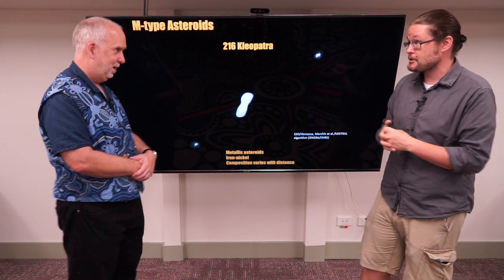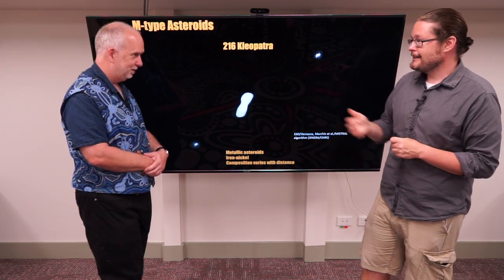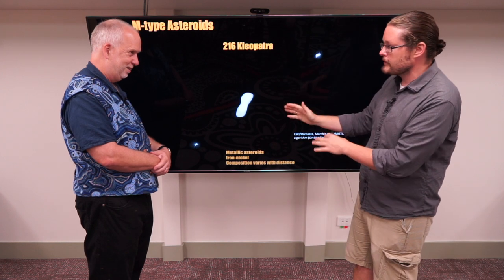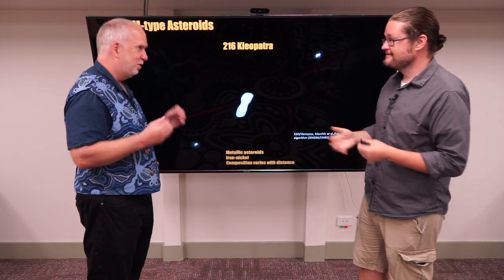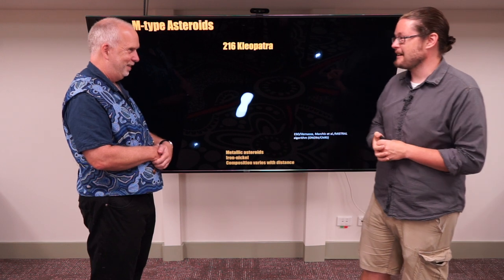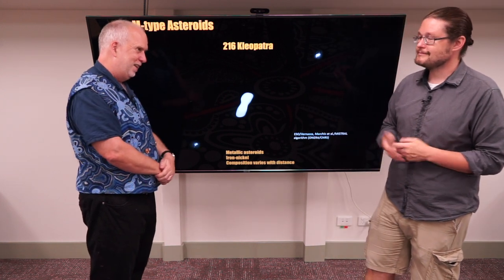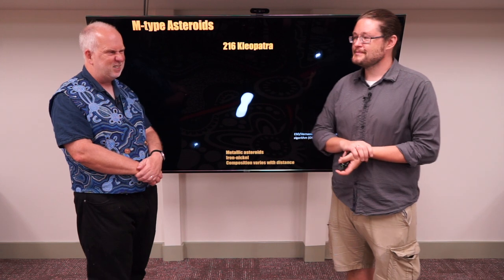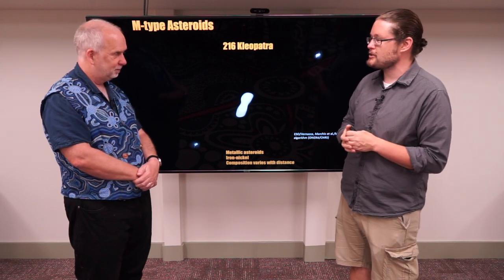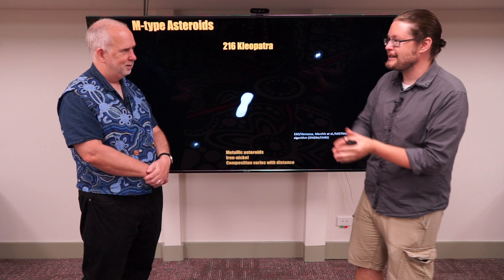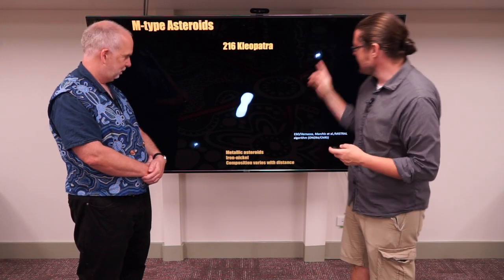Recent missions like OSIRIS-REx and Hayabusa-2 have visited C-type asteroids and brought samples back, which is amazing. Hayabusa-1 visited an S-type asteroid, Itokawa. We haven't visited these M-types yet, but they're the ones we talk about for mining because M stands for metal — iron and nickel. If you want rock, Earth has rock; we don't need rock in space. The trouble is that most of Earth's metals melted and sank to the center of the Earth — 6,400 kilometers below our feet — which is not so easy to get to. The ratios of iron and nickel can even vary within M-type asteroids depending on their location in the asteroid belt.